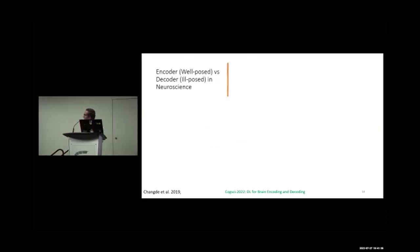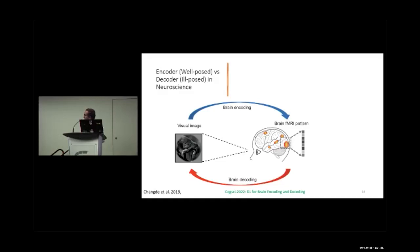Well-posed versus ill-posed problems in neuroscience: for brain encoding, given a visual image and a brain activity pattern, we know which brain areas will activate for a particular stimulus — it's a well-defined problem. In a language task, activations come from language areas; in a visual task, from the visual cortex; in an auditory task, from the auditory area.